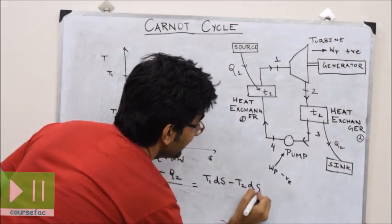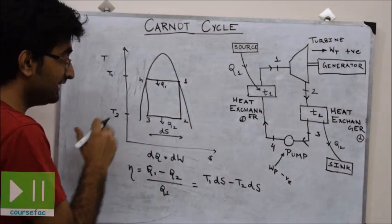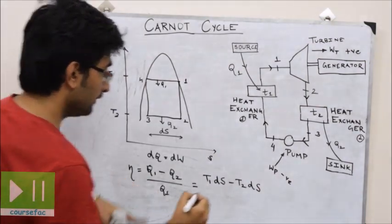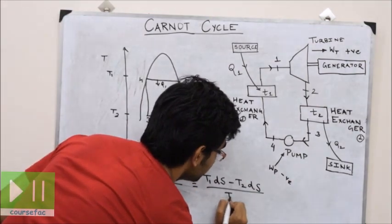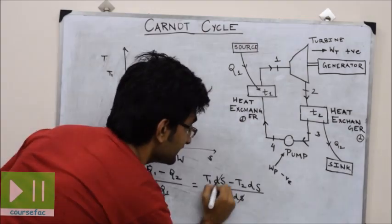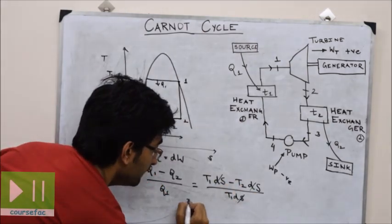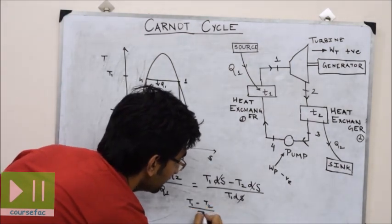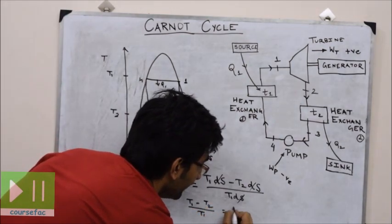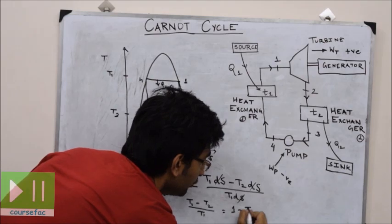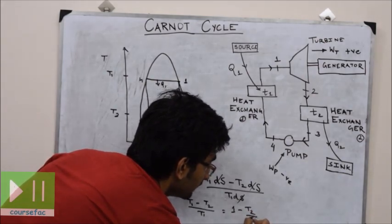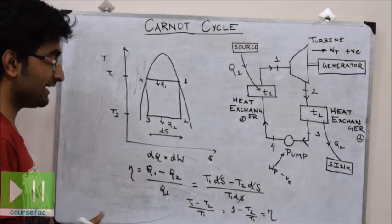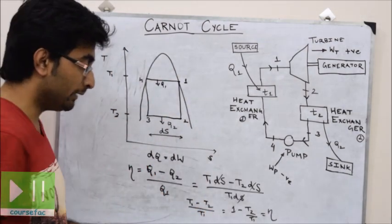Since the area under the TS diagram gives the heat supplied or heat rejected, Q1 equals T1·ΔS. The ΔS terms cancel, and the formula reduces to (T1 minus T2) divided by T1, which equals 1 minus T2/T1. So the efficiency of the Carnot cycle equals 1 minus T2/T1.